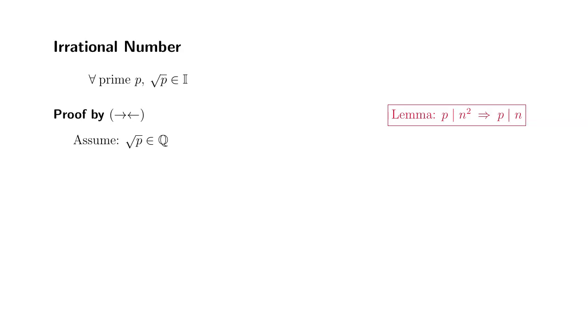If that's the case, by definition there exists integers m and n such that square root of p can be written as m over n.